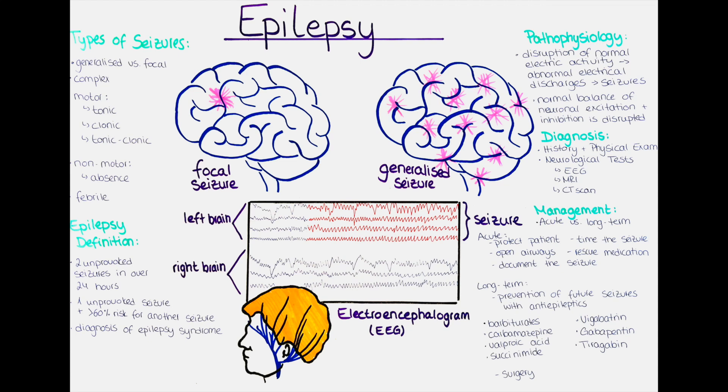The treatment of epilepsy involves managing the underlying cause if possible, and controlling seizures through medication or other therapies such as surgery or a ketogenic diet. The goal of treatment is to minimize the frequency and severity of seizures, to improve quality of life, and to prevent complications such as injury from falls during a seizure.